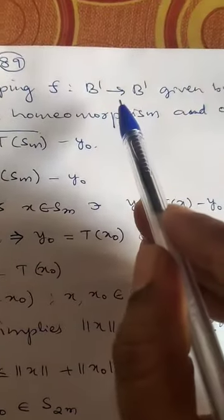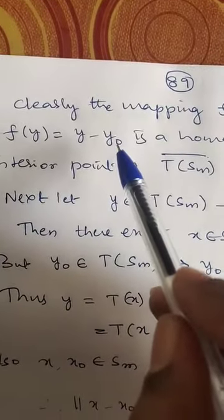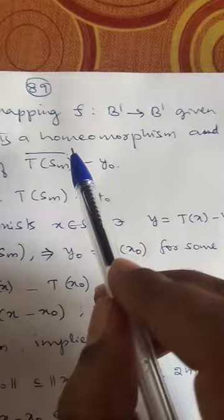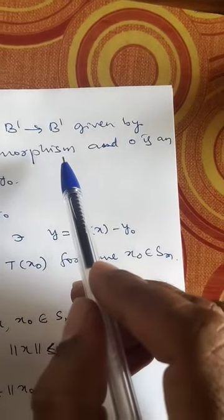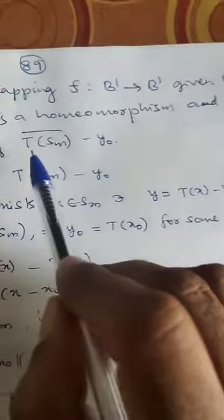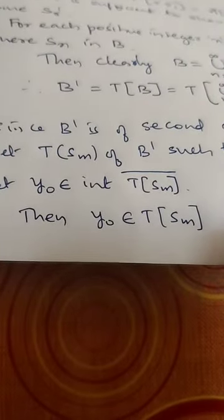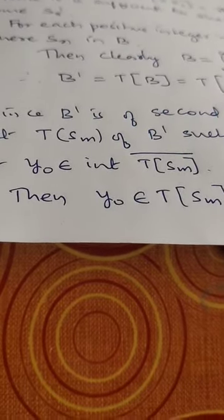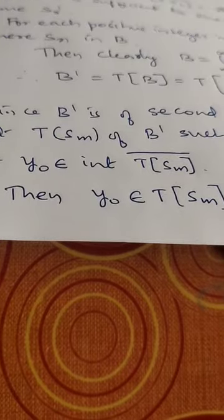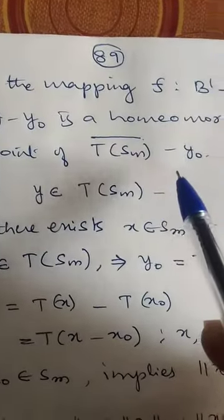Define the map F: B' → B' by F(Y) = Y - Y_0, which is a homeomorphism — it is one-to-one, onto, continuous, with continuous inverse. Since Y_0 is an interior point of the closure of T(S_M), it follows that 0 is an interior point of the closure of T(S_M) minus Y_0.